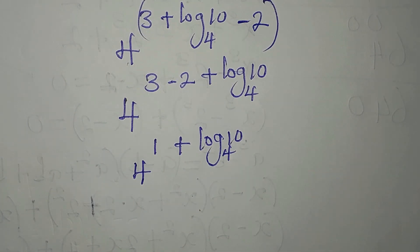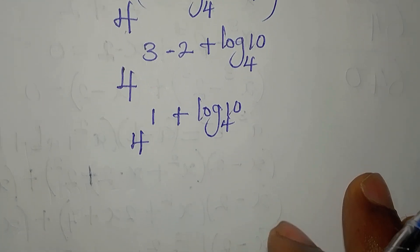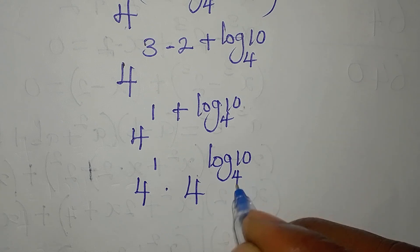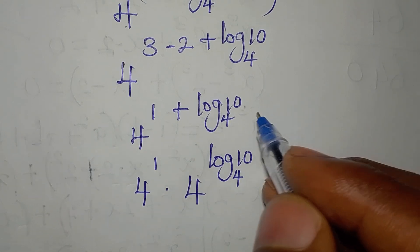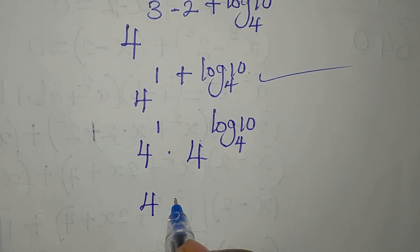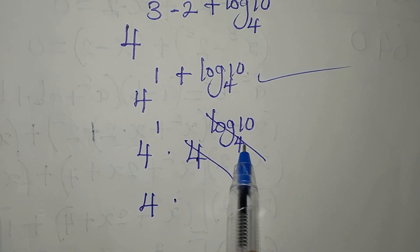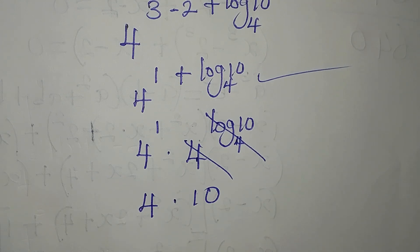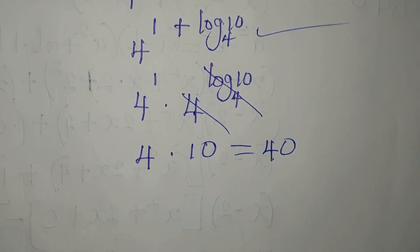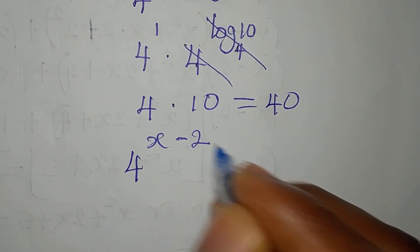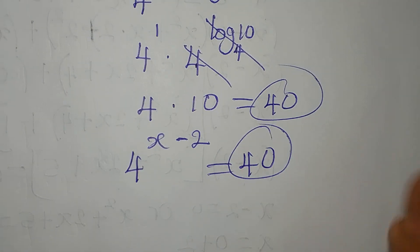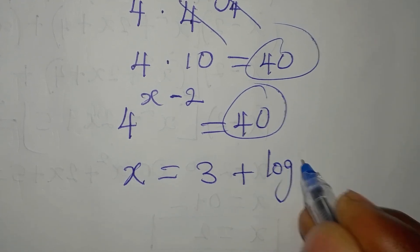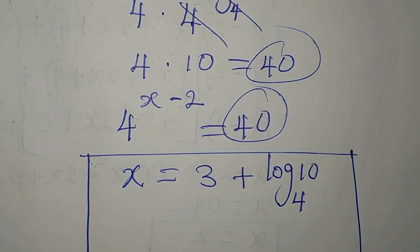3 minus 2 is 1, so we have 4 to the power of 1 plus log 10 to base 4. Applying the laws of indices, this is 4 to the power of 1, times 4 to the power of log 10 to base 4. That gives 4 times 10, which equals 40. This matches the right-hand side, so x equals 3 plus log 10 to base 4 satisfies the given equation. Thank you for watching.